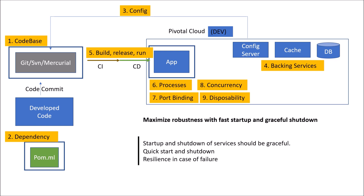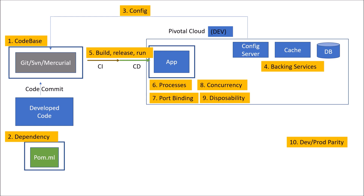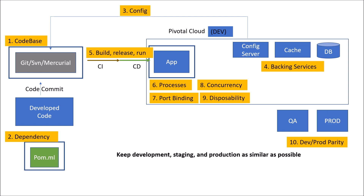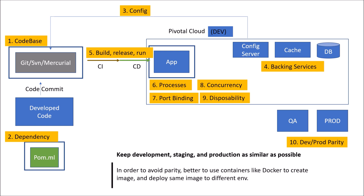Moving to the next factor: dev/prod parity. As the name suggests, dev/prod parity means there should be as much similarity as possible between development, staging, and production environments. In microservice architecture, we now generally use containers. To avoid parity issues, it is better to use containers like Docker to create an image and deploy the same image to different environments.